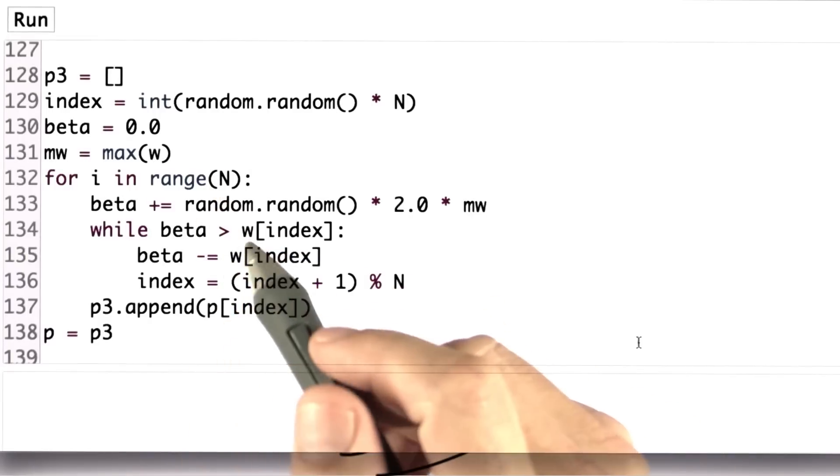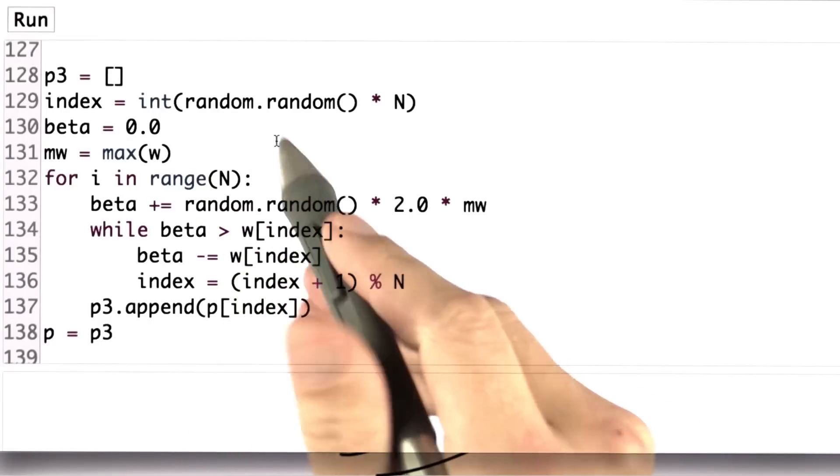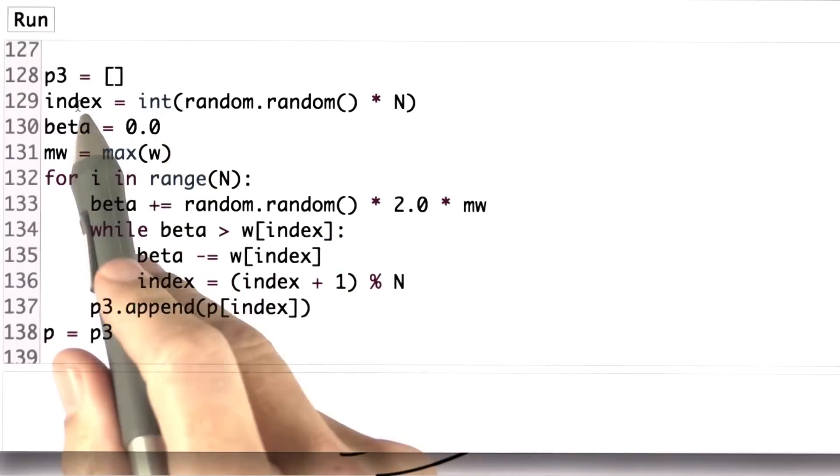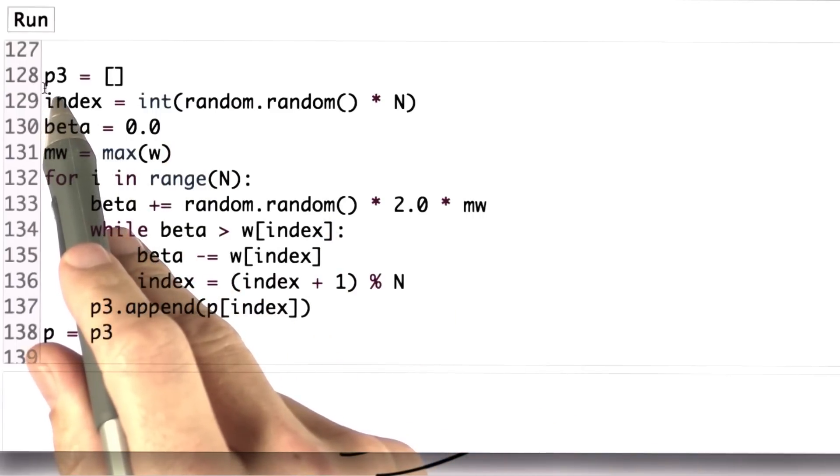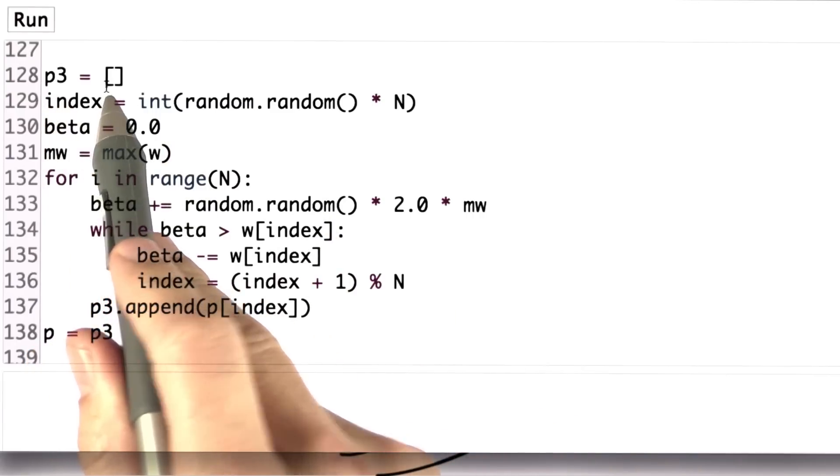So here's my implementation of the resampling step, and it follows the same logic that I gave you in the diagram. We're creating a new set of particles called P3, and it's an empty set in the beginning.